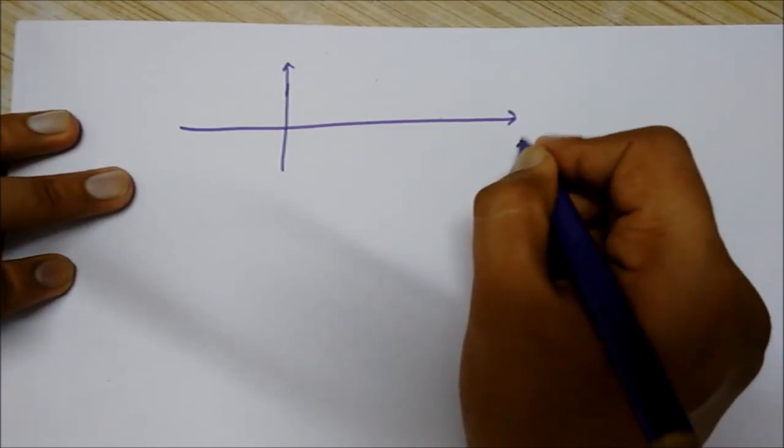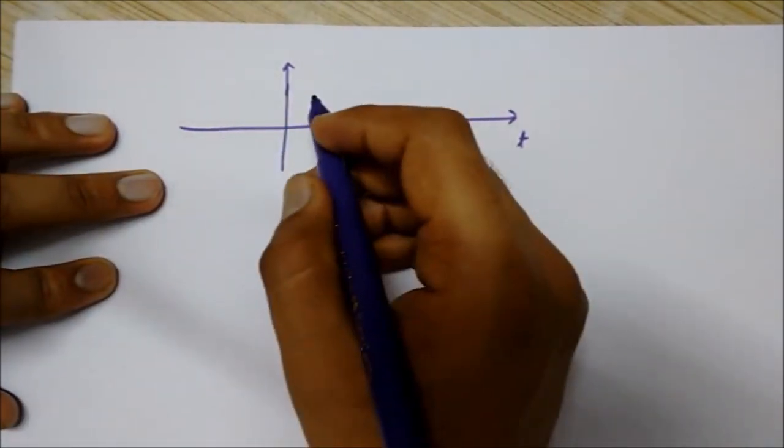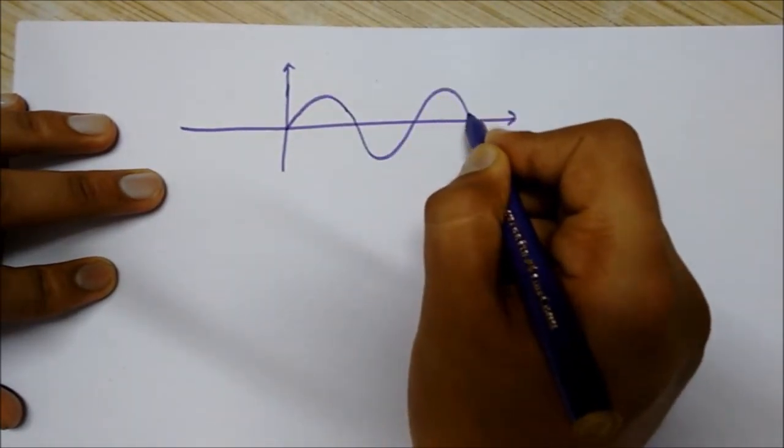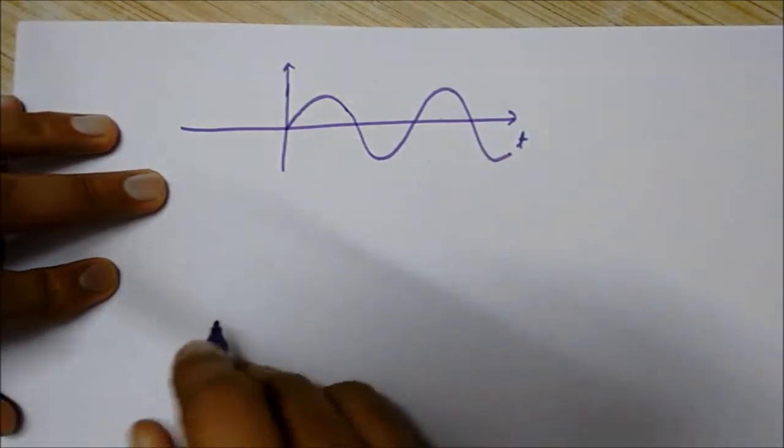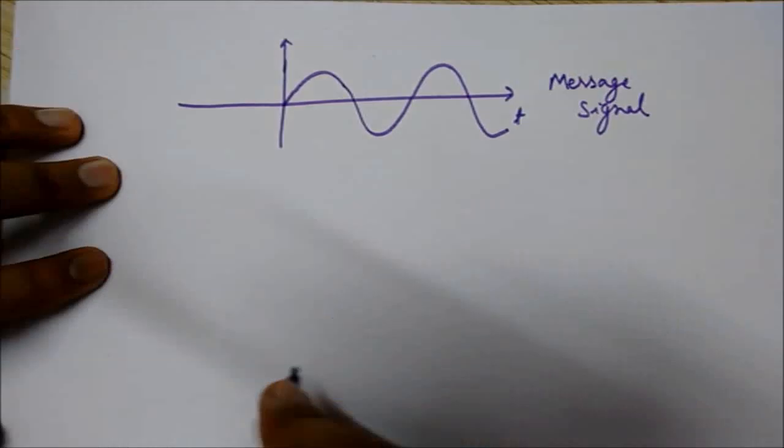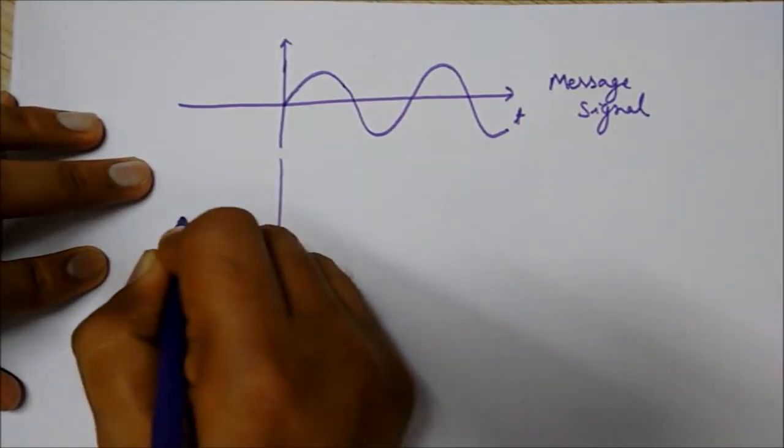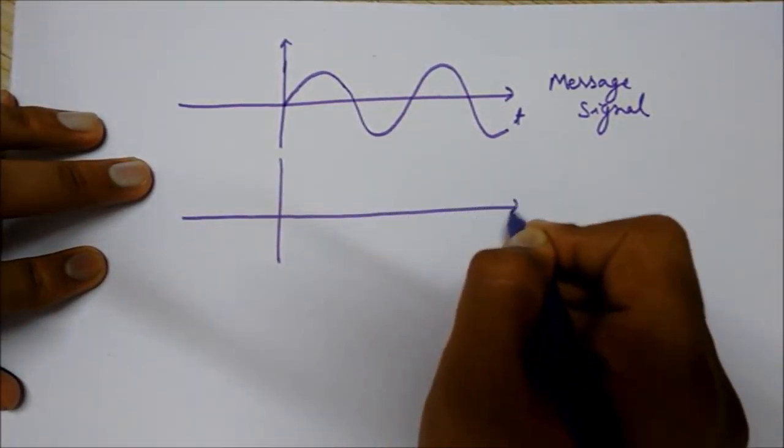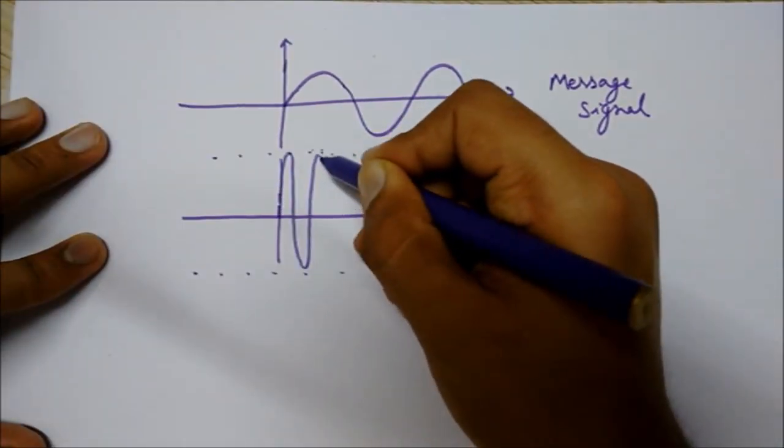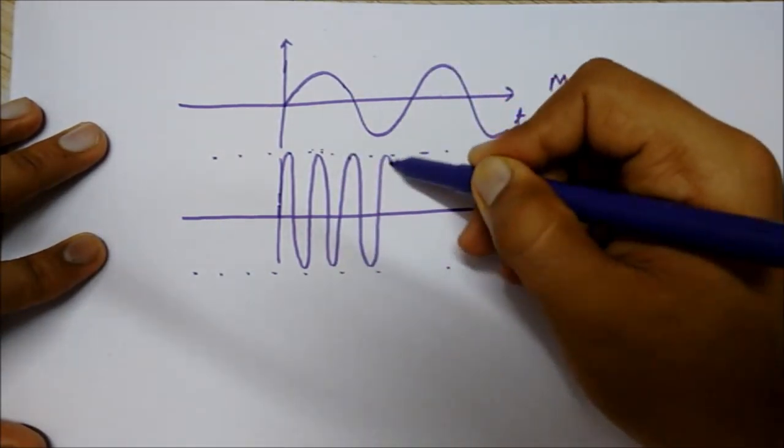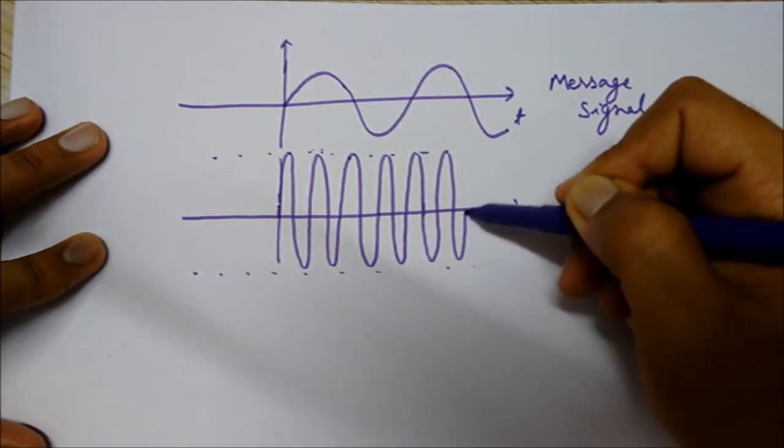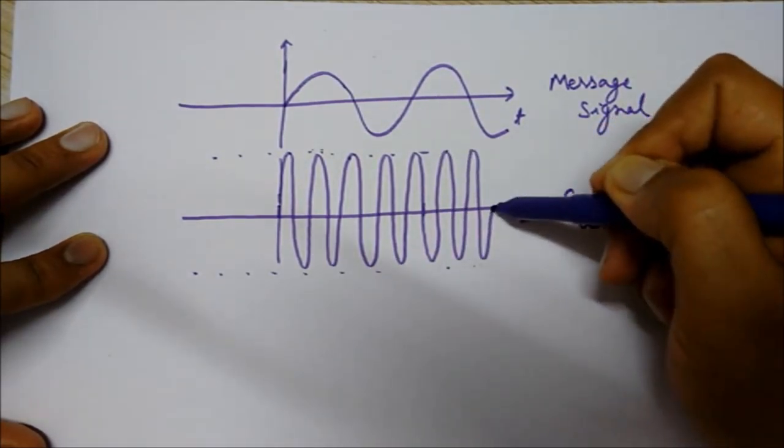This is the time axis. I am drawing the message signal. This is the message signal. And this one, I am drawing here the carrier wave. And this one, I am drawing the phase modulated wave. This is the carrier wave, having constant amplitude and constant high frequency.